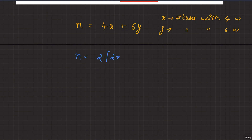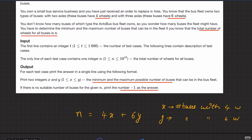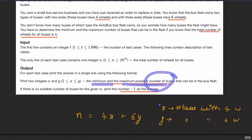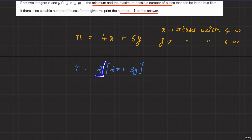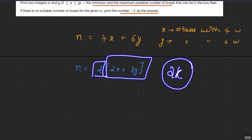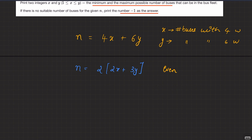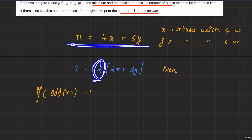Observe that N = 2*(2x + 3y), which means N must be even, since x and y are integers. This gives us a clear observation: if N is odd, simply print minus one — it's not possible to represent N using four-wheel and six-wheel buses.